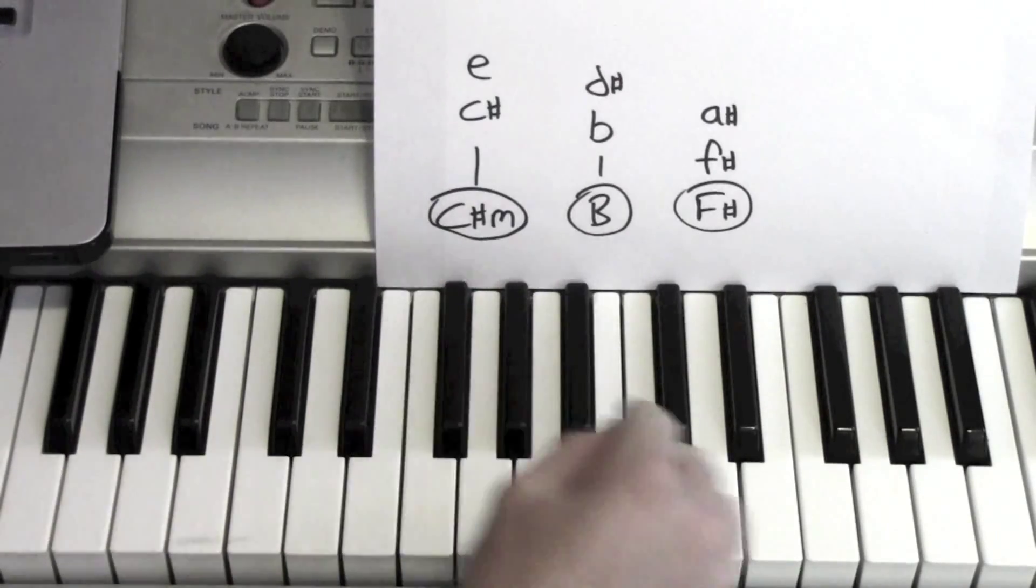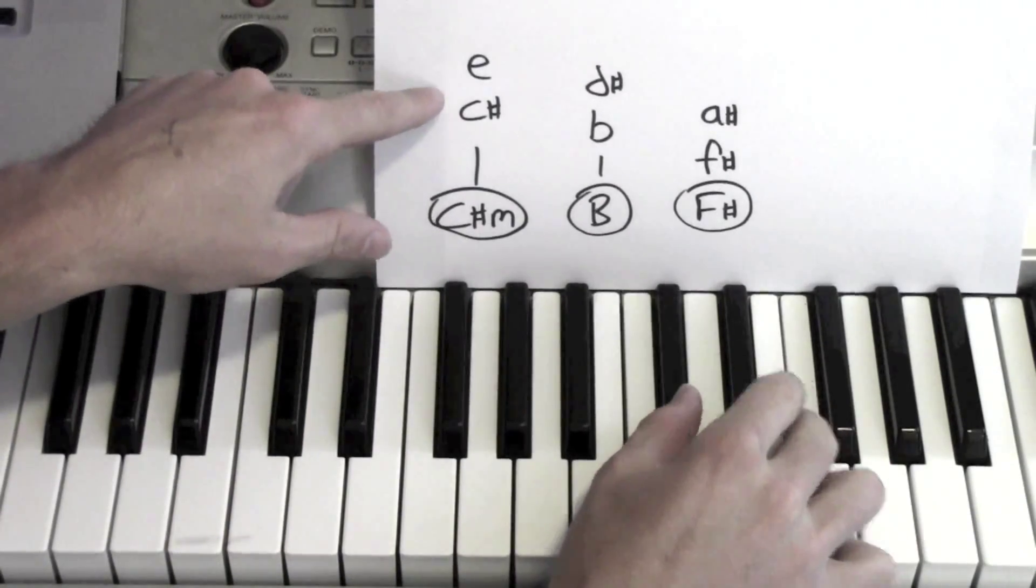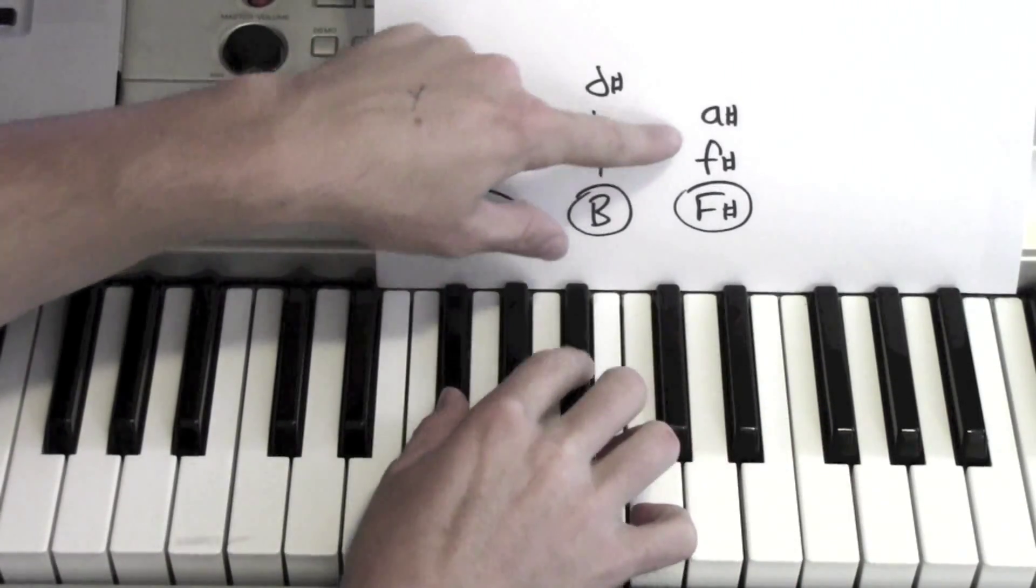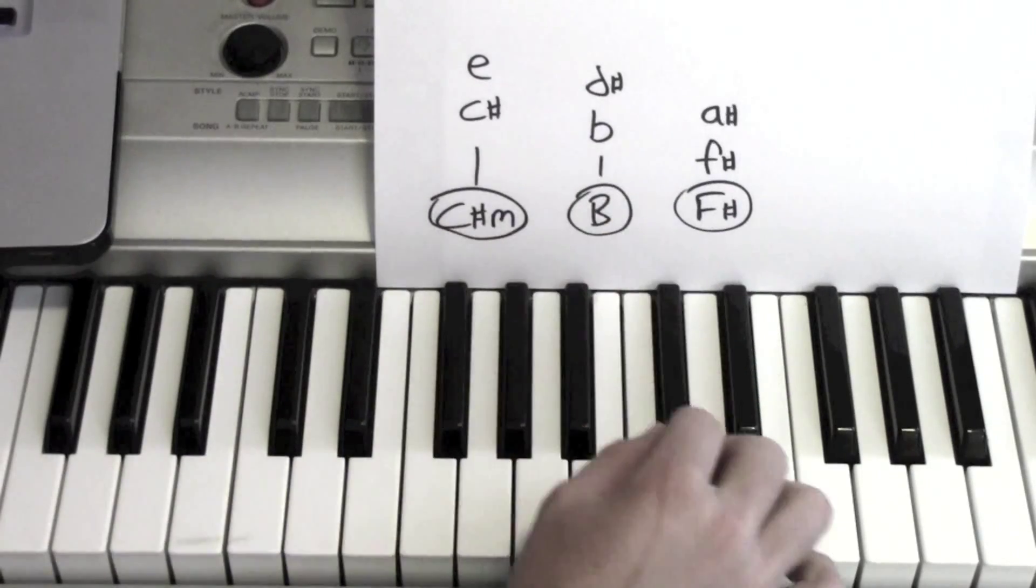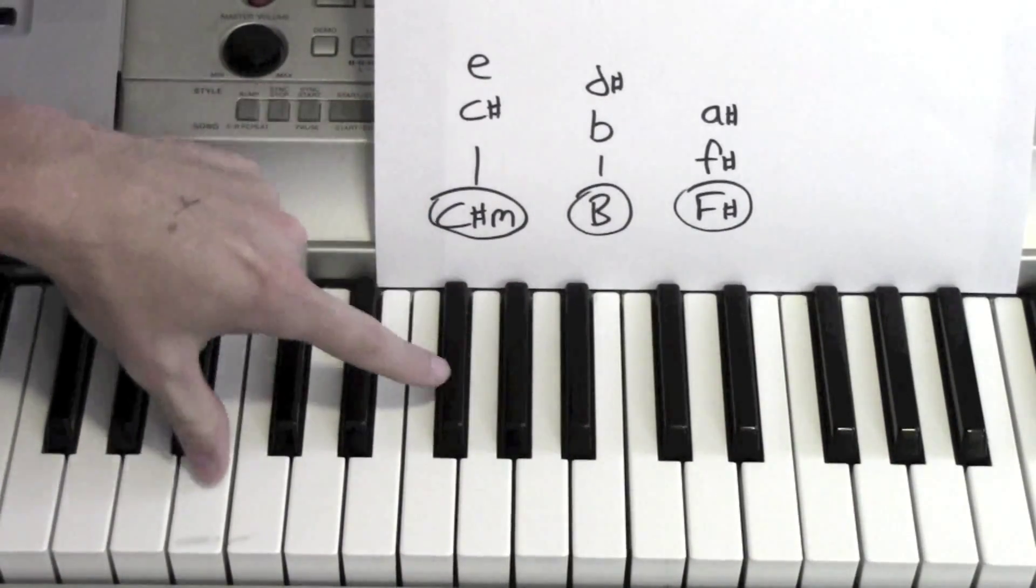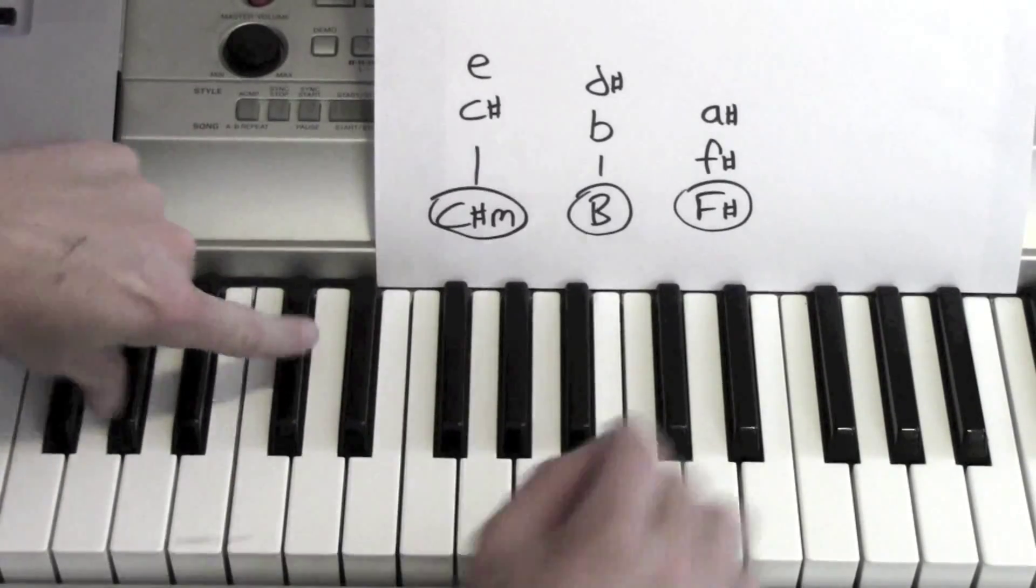So once it hits there, instead of just playing a C sharp and F, I'm playing a C sharp and E, to a B and D sharp, to F sharp and A sharp. Same for the other two. Left hand, same thing, C sharp, B, F sharp. Alright, so I'll put that all together.